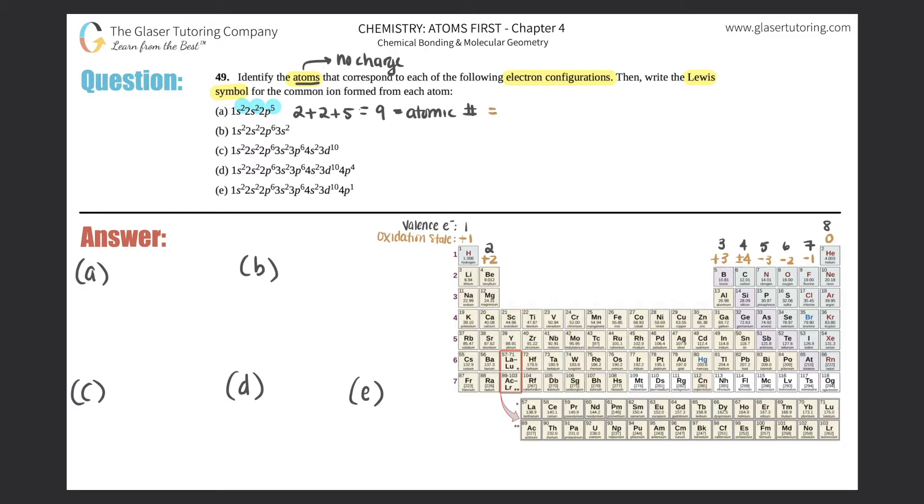So this atom is fluorine. So let's just run through those first and then we will figure out the Lewis symbol. For the next one, for b, it would be 2 plus 2 plus 6 plus 2, so when you do that we have 12. So that's 12, which is the atomic number. And if I scan the periodic table, 12 is over here. That's magnesium.